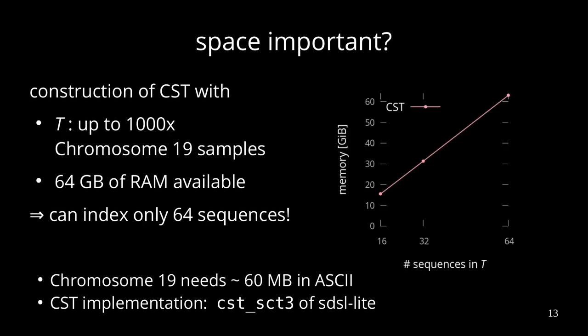But here we focus on really compressed space. In our application, we take a text containing multiple chromosome 19 samples, and we want to scale the text up to 1000 of them. Here we want to construct the compressed suffix tree. You can see on the right-hand side that the memory requirements scale linearly with the number of sequences stored in T. For our machine, we use just 64 GB of RAM, so we could only index about 64 sequences. Note that chromosome 19 needs about 60 MB if stored in ASCII, and here our CST implementation is the CST-SCT3 of the SDSL-Lite.